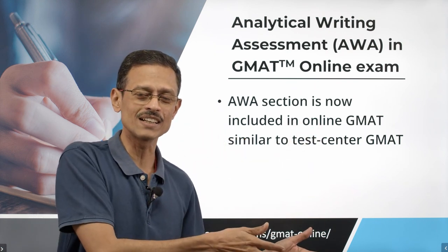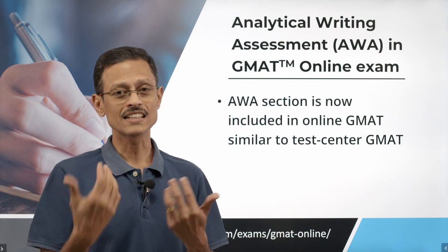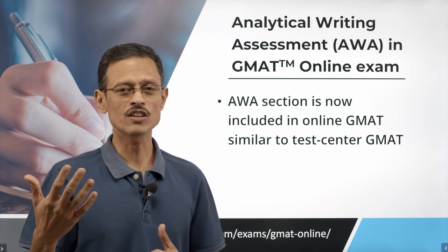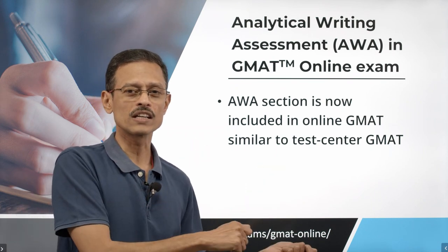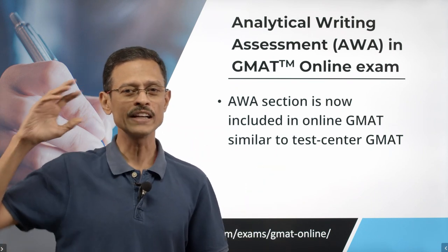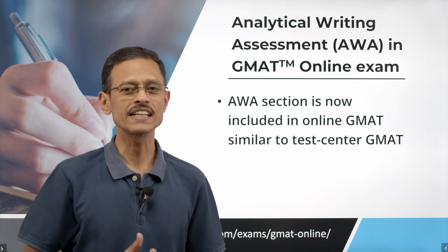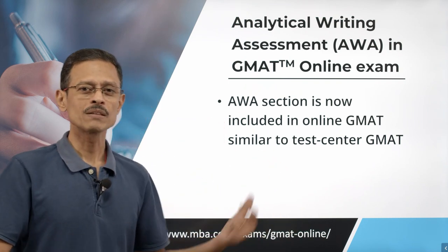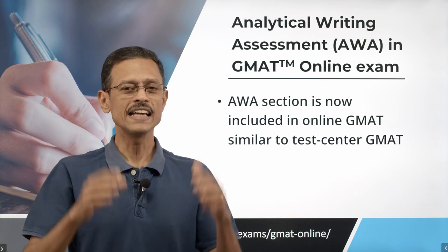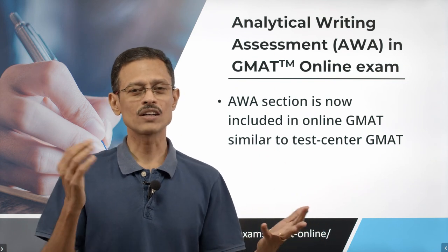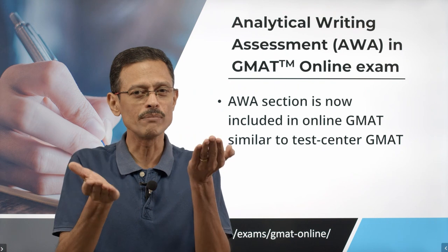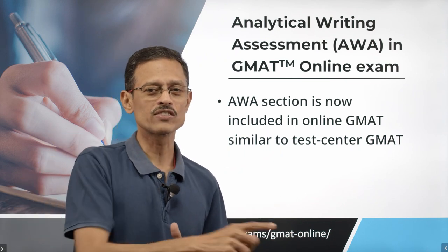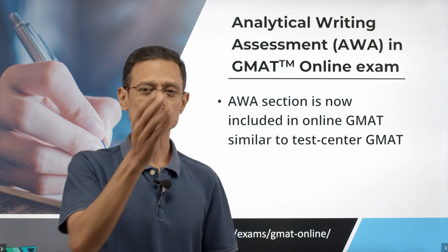Without the AWA available in the online version, students were forced to go for the test center based version — especially difficult in countries experiencing the second wave of COVID where test centers may not be open, or where you wouldn't want to risk contracting the disease. Students were wondering whether to take the online version or wait for test centers to open. From April 8th, the online version includes the AWA section, so any score report — online or test center based — will have scores of all four sections, making them on par.